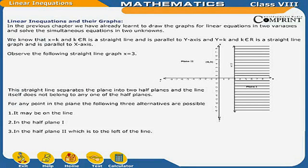Equations and their graphs: In the previous chapter, we have already learnt to draw the graphs for linear equations in two variables and solve the simultaneous equations in two unknowns. We know that x = k, where k belongs to R, is a straight line parallel to the y-axis, and y = k, where k belongs to R, is a straight line parallel to the x-axis.